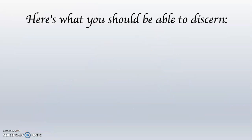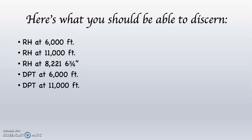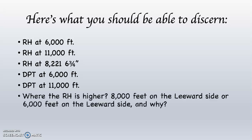But here's what you should also be able to discern: what the relative humidity is at 6,000 feet on the windward side; what the relative humidity is at 11,000 feet on the windward side; what the relative humidity is at 8,221 feet and 6 and 3-quarter inches on the windward side; what the dew point temperature is at 6,000 feet on the windward side; what the dew point temperature is at 11,000 feet at the top of the mountain; and where the relative humidity is higher — 8,000 feet or 6,000 feet on the leeward side, and why.